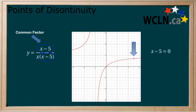When we solve the common factor of x minus 5 for 0, we get x equals 5, the location of the discontinuity.